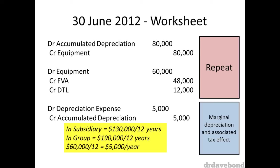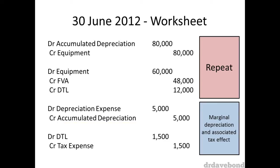There is an additional consideration that needs to be taken care of: there is a tax effect from this additional depreciation. The additional depreciation effectively lowers the group accounting profit by $5,000. As the group profit is lower, the tax expense should be lower as well. With the 30% tax rate, the $5,000 additional expense lowers the tax expense by $1,500, which means there is a credit tax expense $1,500. The lower tax expense doesn't mean you are actually paying less tax, so we wouldn't see debit cash here. Rather, we see a reduction in the deferred tax liability created by the fair value adjustment, so DTL is debited $1,500.